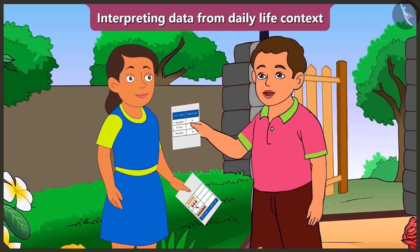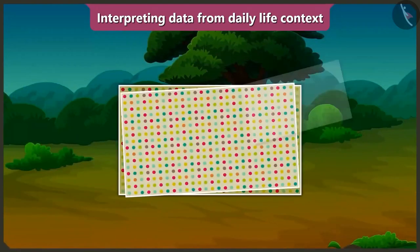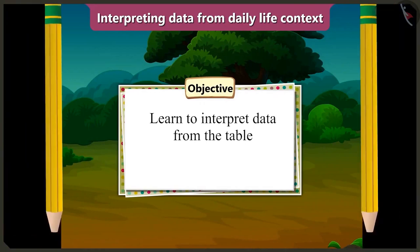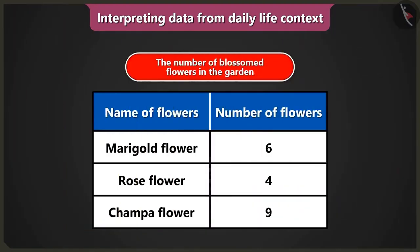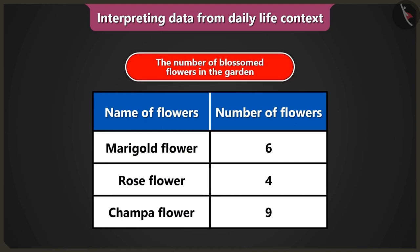Come on, let me teach you. Today in this video, we will learn to interpret data from the table. Look, there are different flowers in this garden. How many flowers have blossomed — that data has been collected and filled in the table. That's why it has been written on the top of the table: the number of blossomed flowers in the garden.